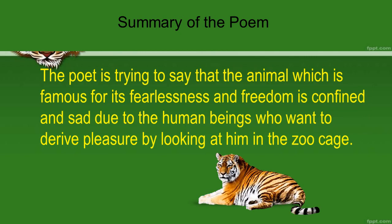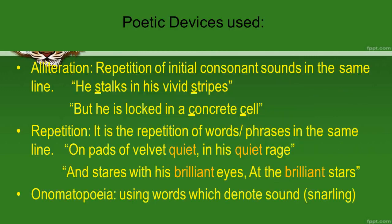The poet is trying to say that the animal famous for its fearlessness, power, and courage — even for him, freedom is confined. He became sad due to the human beings who want to derive pleasure by looking at him in the zoo cage. That's all about this poem.